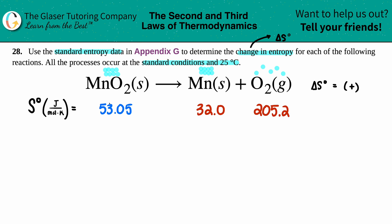Now I did have to go to that Appendix G, aka just an appendix in the back of the book, just to write out what the S values are for the corresponding substances. So MnO2 is 53.05, Mn is 32, and O2 is 205.2.